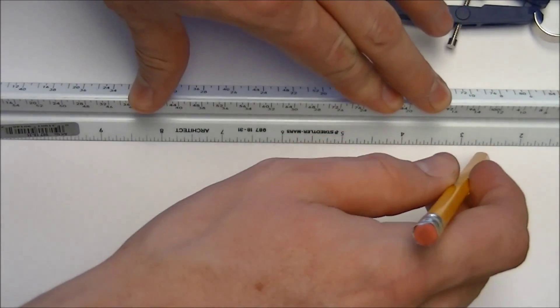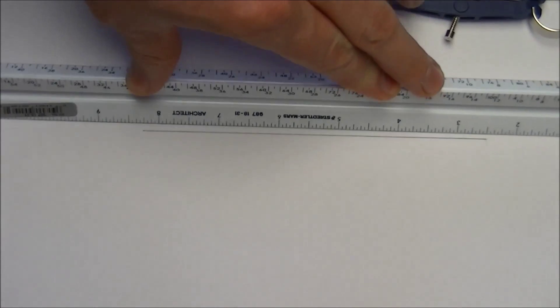We're going to start off by drawing one line, and we're going to draw perpendicular to that line using the compass.